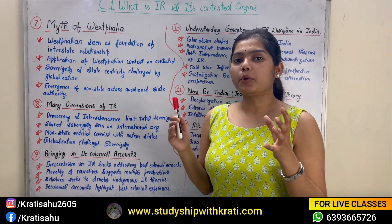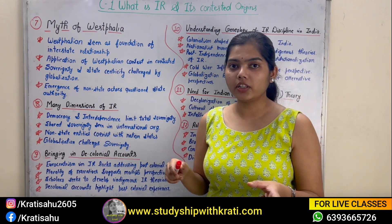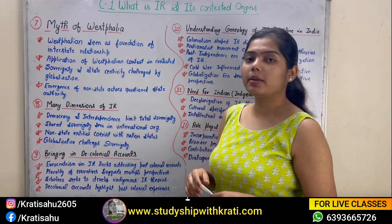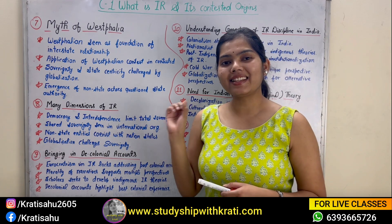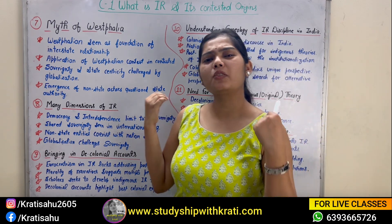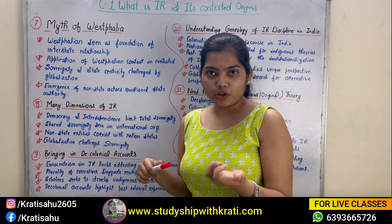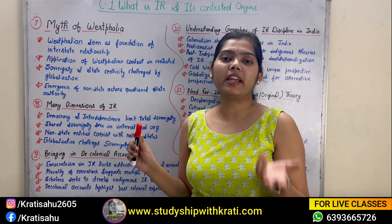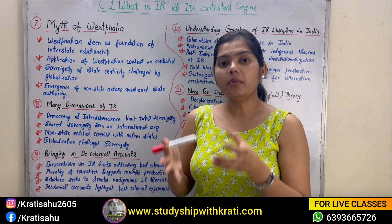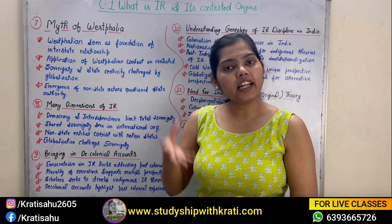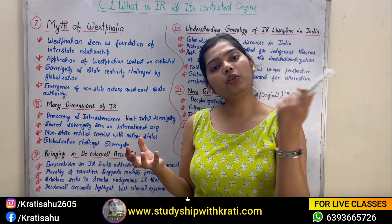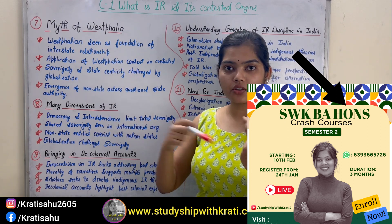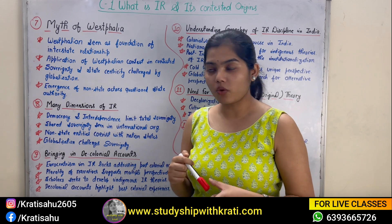In the first part we covered up to six topics - the Big Bang Theory and the contestation, and the Westphalia Treaty of 1648. This treaty was a universal aspect: in 1648 the idea of sovereignty was not fully understood but it was universally applied. So the Westphalian model is seen as the foundation of interstate relationships when they were understanding the concepts of state and sovereignty.